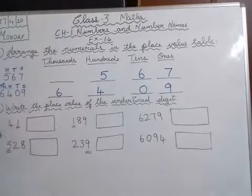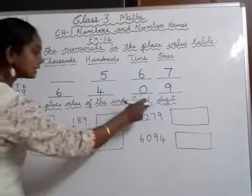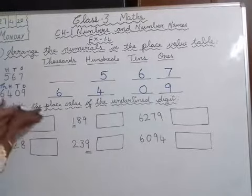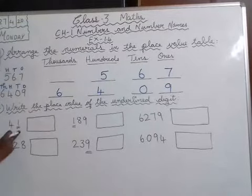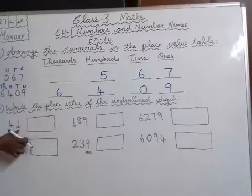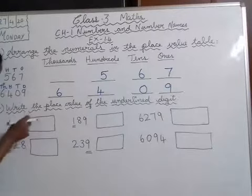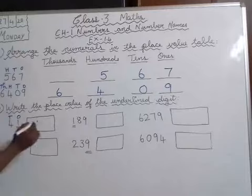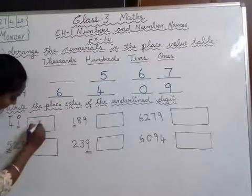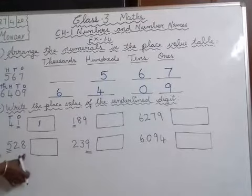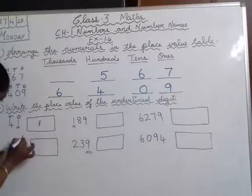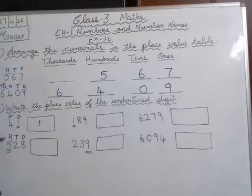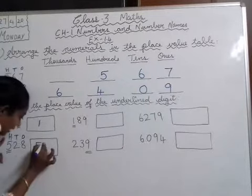Question number 2 — write the place value of the underlined digit. In 41, the underlined digit is 1. Writing ones and tens: 1 is in ones place, so the place value of 1 is 1. Next, 528 — 5 is underlined. Writing ones, tens, hundreds: 5 is in hundreds place, so the place value is 500.